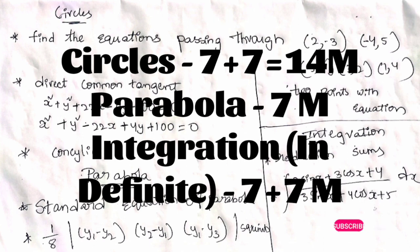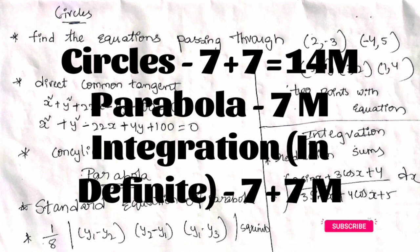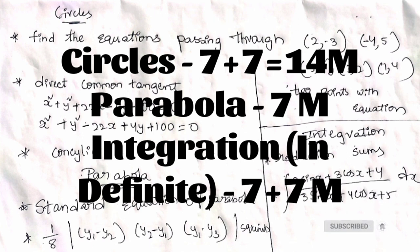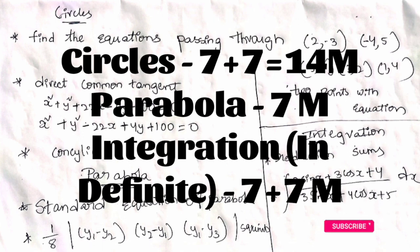First of all, let us choose the weightage. In total, there are nearly 4 to 5 chapters. In those chapters, there are 8 weightage topics. First, circles carry 22 marks — 7 marks, 7 marks, 4 marks, and 2 marks respectively.